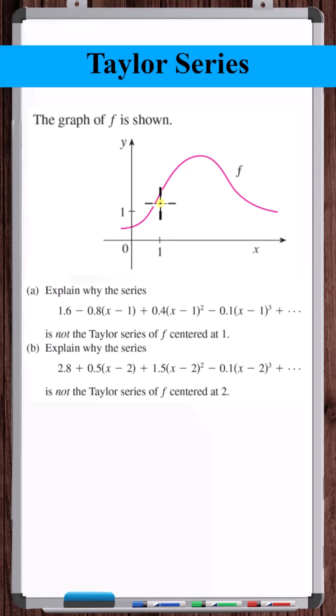Well, we know that the coefficients of the Taylor series, so any coefficient c sub n, is going to be the nth derivative of the function evaluated at the center point divided by n factorial.